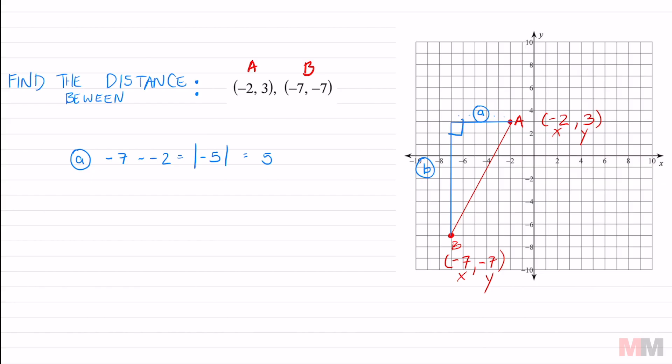And why is this useful? Why is this subtraction thing useful? If you don't want to count all those dots, you can just subtract the y coordinates for that one. So if I'm trying to find leg B, I can subtract negative seven minus three and then take the absolute value of that result. So negative seven minus three is negative 10. Absolute value of negative 10 is 10. Now we know A is 5 and B equals 10.